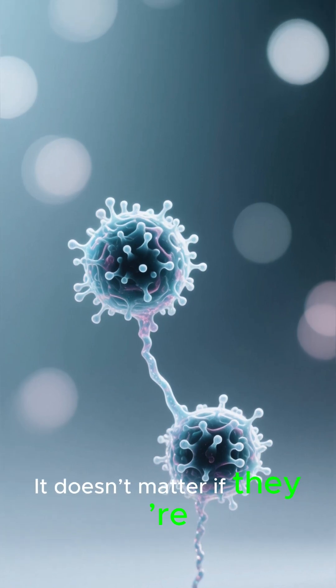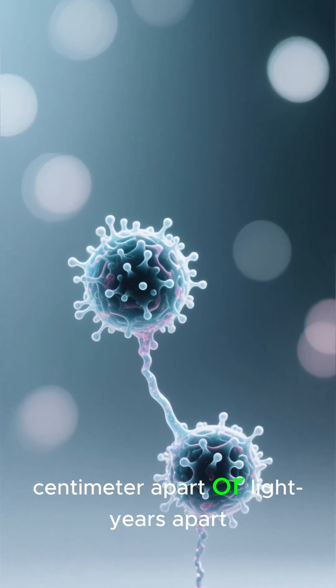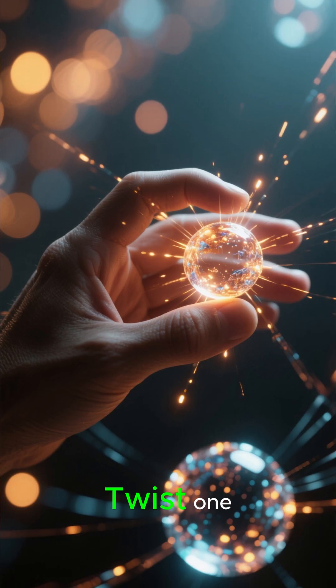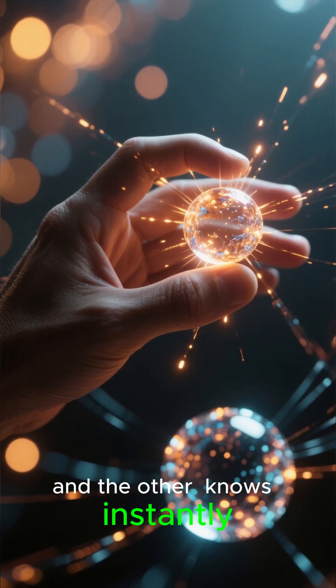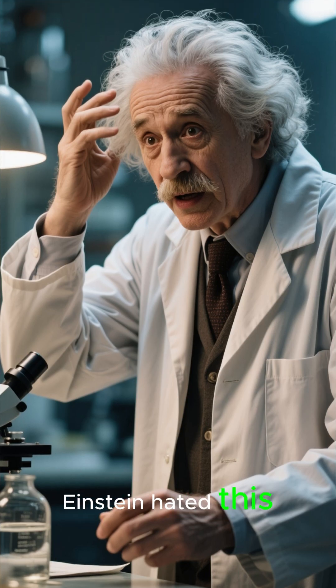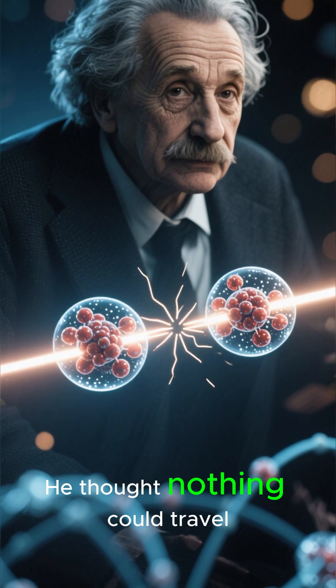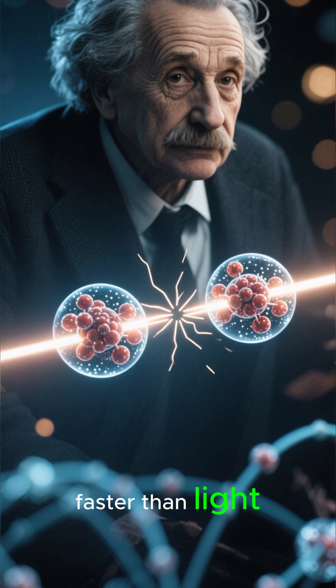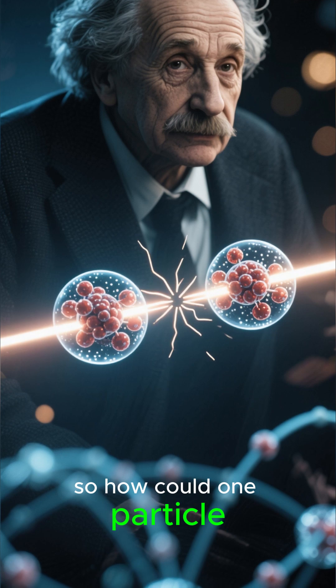It doesn't matter if they're a centimeter apart or light years apart. Twist one and the other knows instantly. Einstein hated this. He thought nothing could travel faster than light, so how could one particle signal the other?